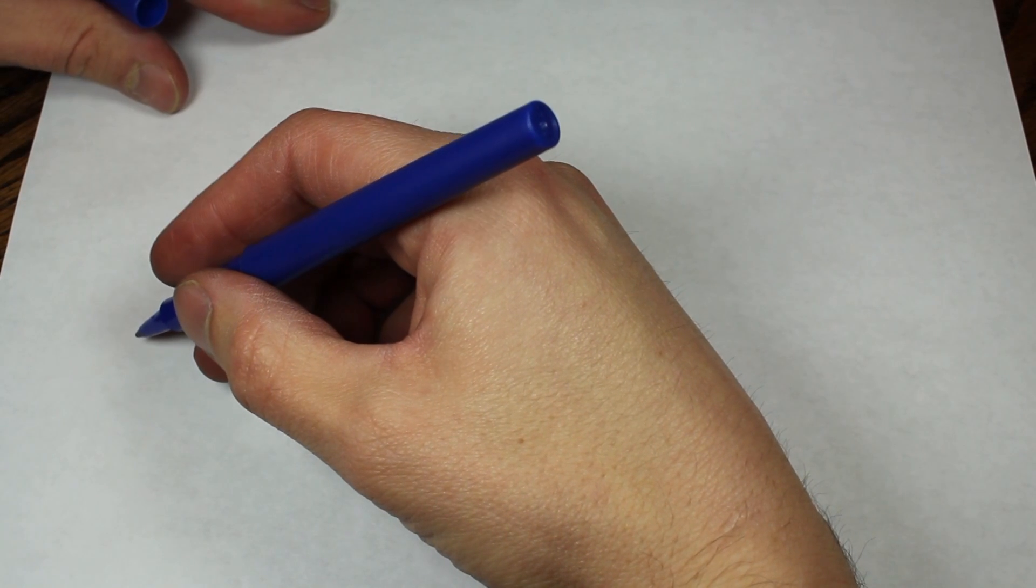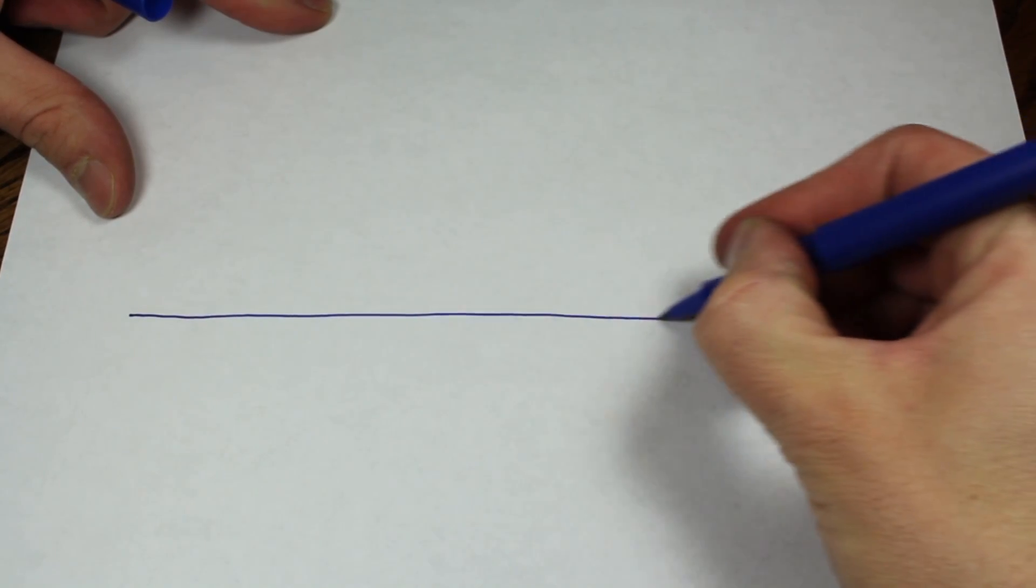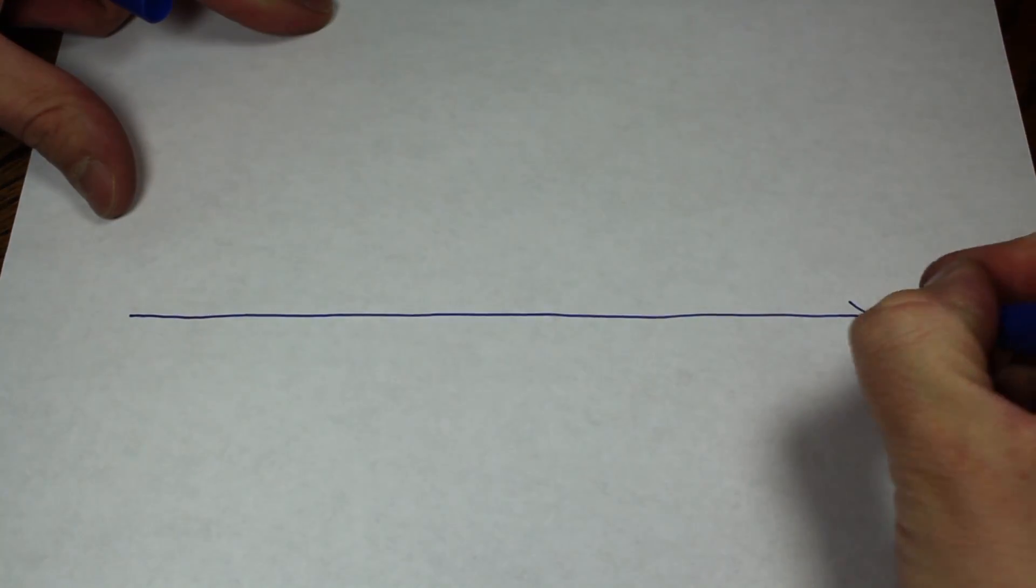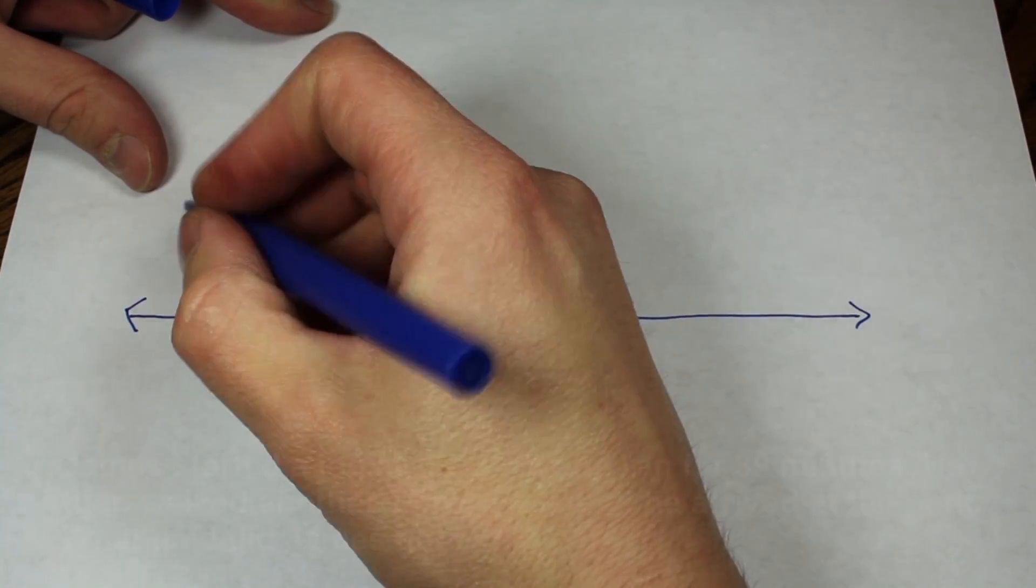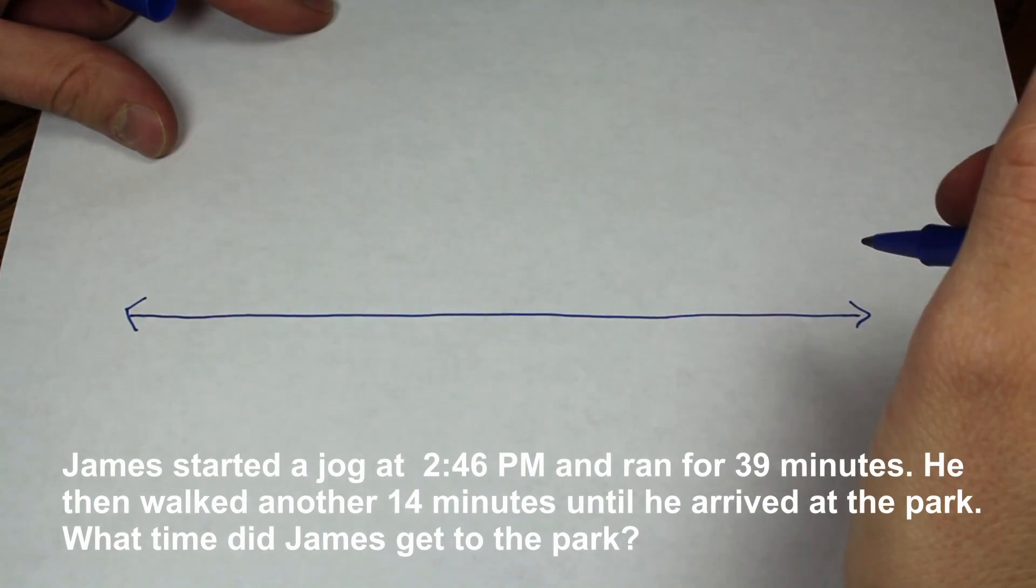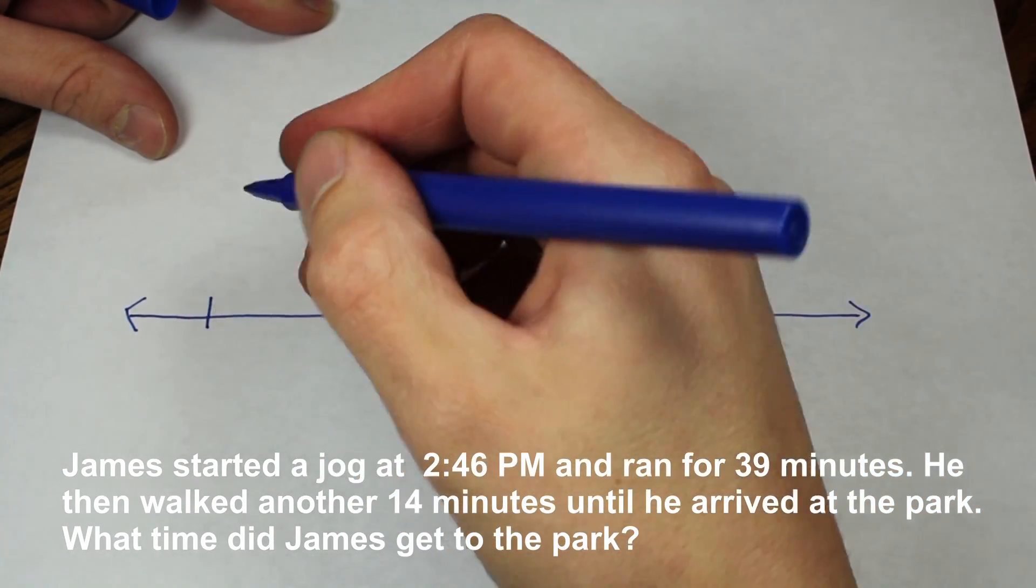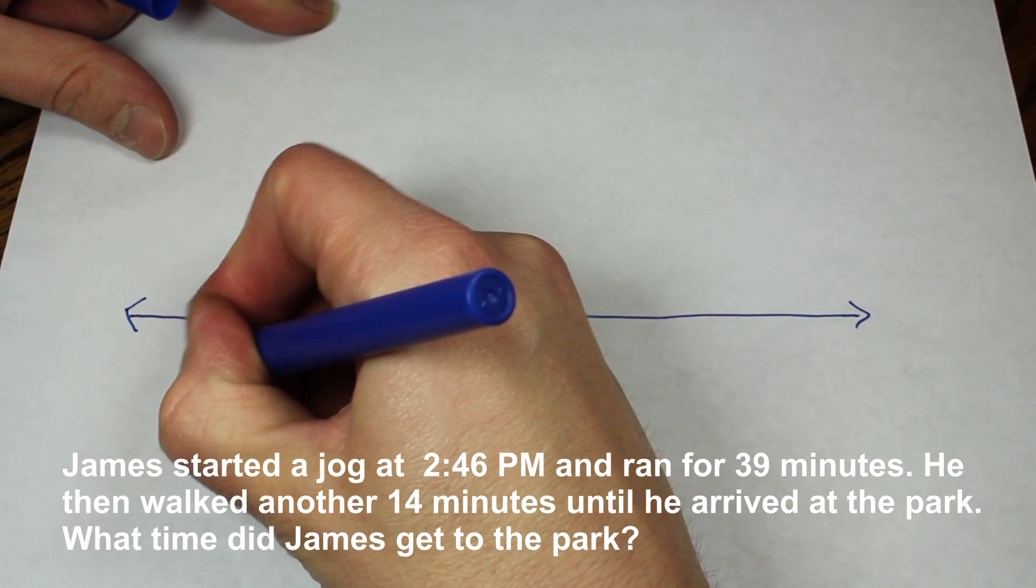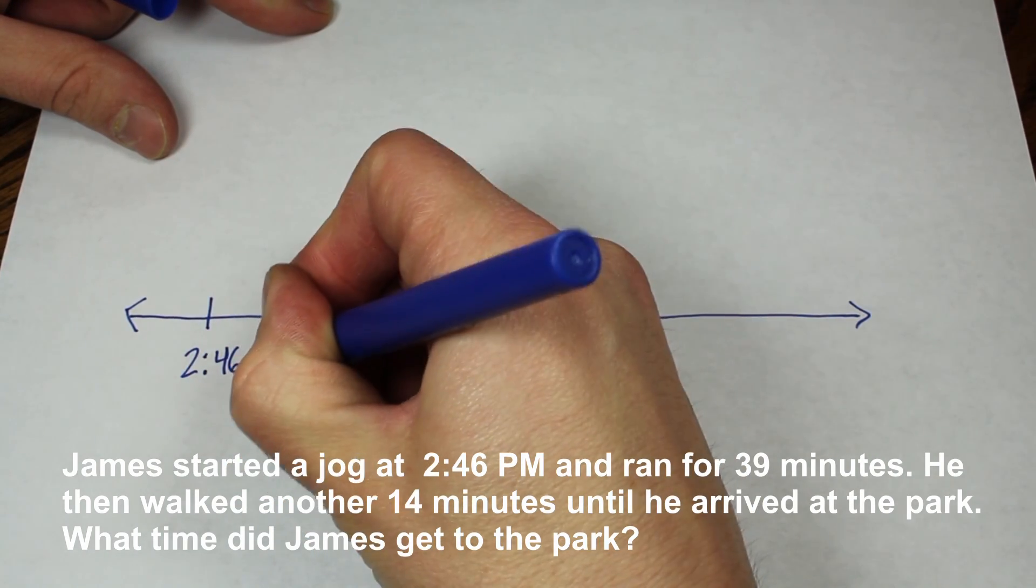I'm going to go ahead and draw a number line. And then I'm going to use our starting time. And since when we're dealing with time, earlier times go on the left. So we started at 2:46 PM.